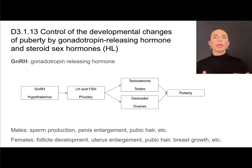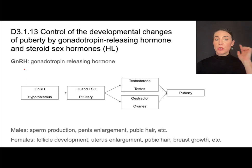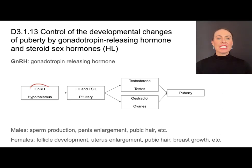Puberty is really going to be kicked off by a hormone that comes from the hypothalamus called GnRH. GnRH stands for gonadotropin releasing hormone, and it comes from the hypothalamus, which is in the brain. The hypothalamus is in a special relationship — it's connected to the pituitary, and GnRH causes the pituitary to release two hormones of its own: LH and FSH.